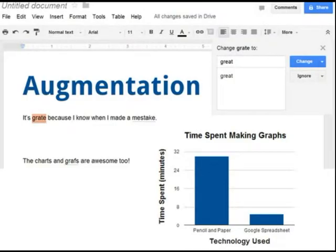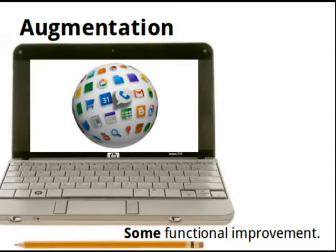Extending beyond Google Docs, the host of other apps offered by Google can also help augment the learning environment. While tools like Spell Check and a variety of different formatting options can help us boost productivity and enhance the quality of our written work, apps like Google Spreadsheet can help us produce more accurate data tables and graphs in only a fraction of the time. Augmentation is a significant step up from substitution as it provides a functional improvement, creating a more effective learning environment in which students can focus on specific learning tasks and feel confident that the tools they're using are worthwhile.